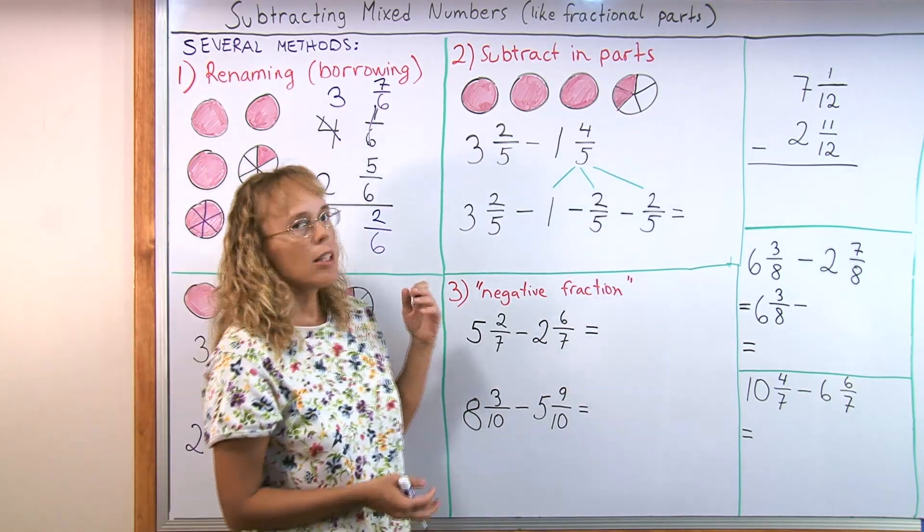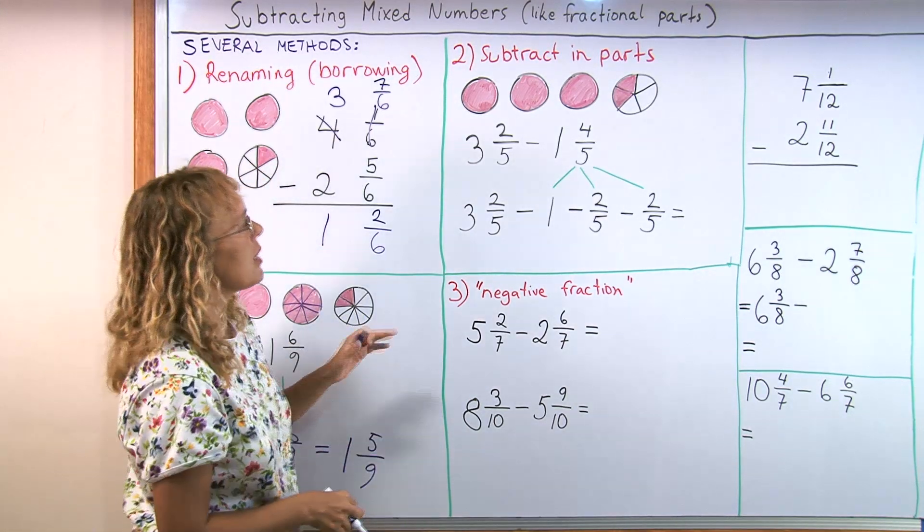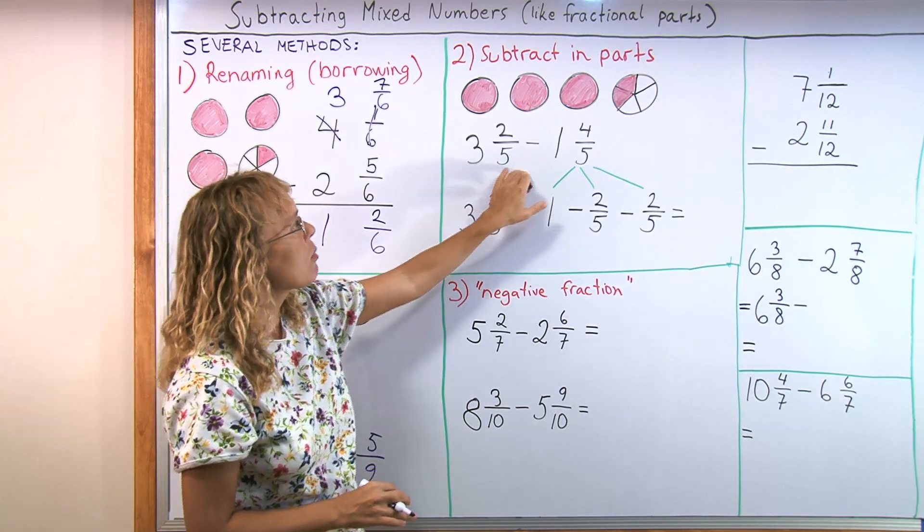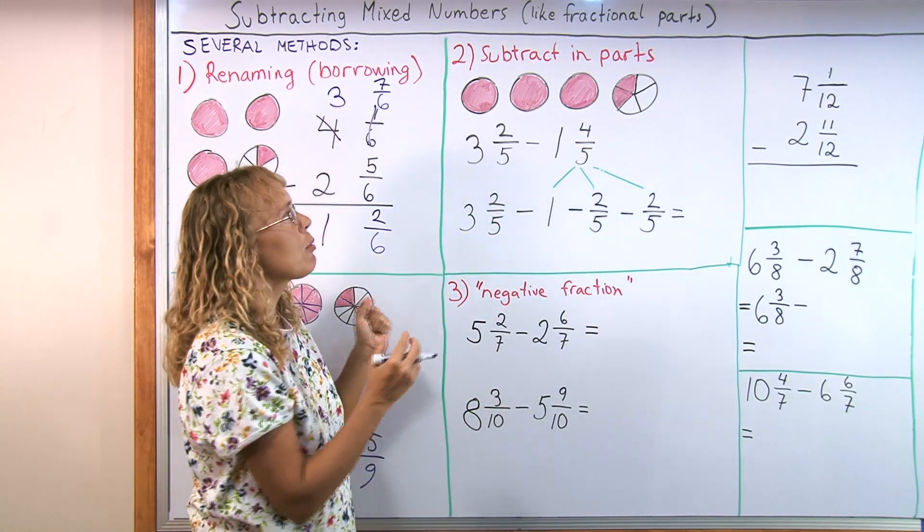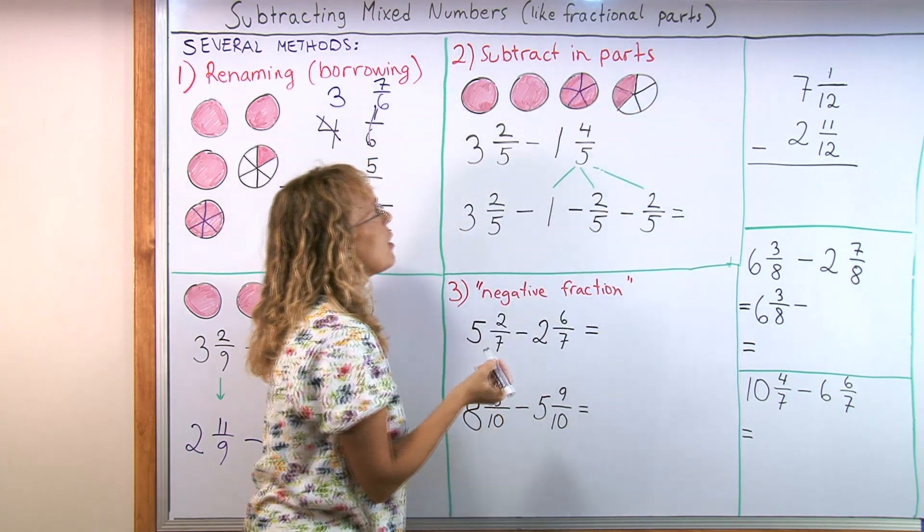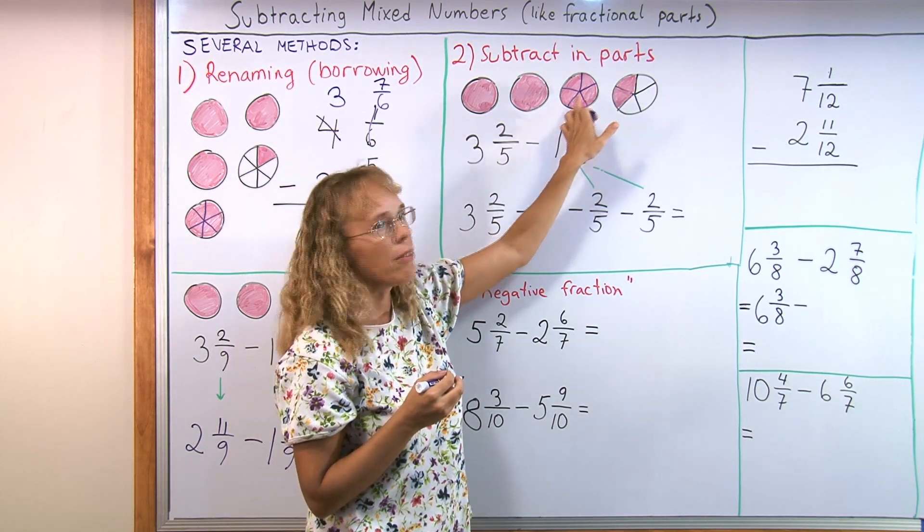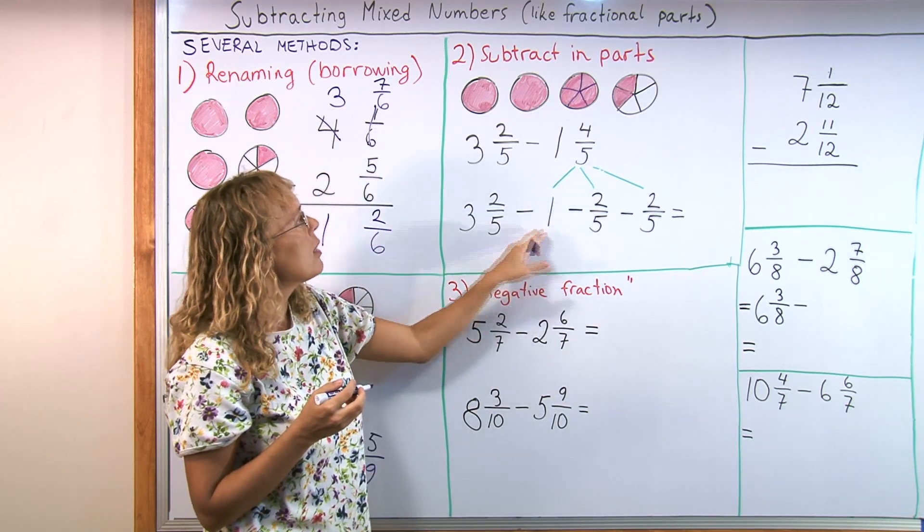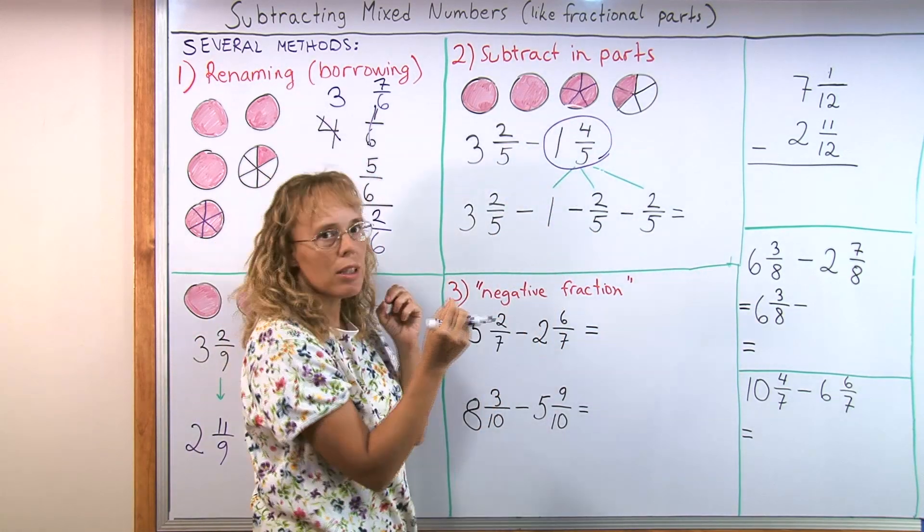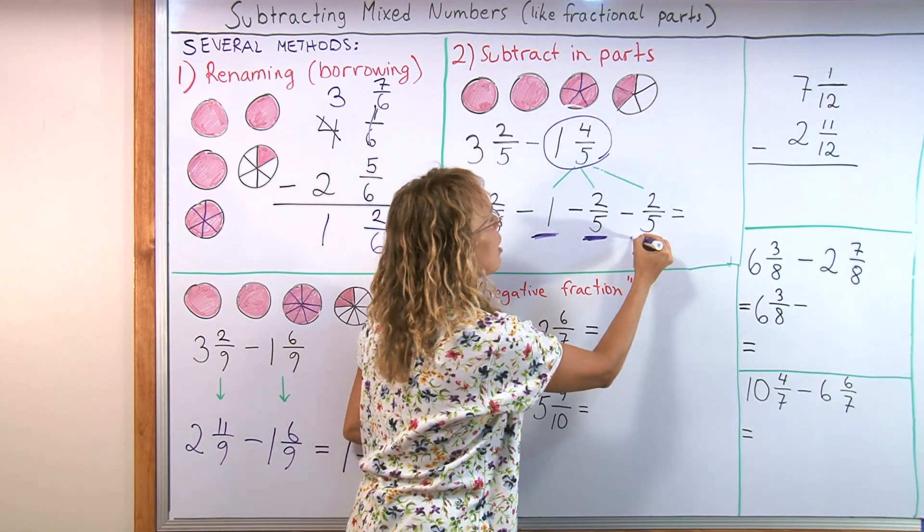The next method I call it subtract in parts. With the visual model it's going to be actually identical looking as in here. But it's written down a little bit differently if you write a second step for the problem. 3 and 2/5. And we take away 1 and 4/5. In the visual model it would be the same thing. You would just divide this into fifths. One of the pies here. And then you would cross out 1 whole pie and 4/5. Take away these 2/5 first and then 2/5 from here. But I wrote it down like this. A number that we subtract from is the same. But then this here. This number is broken into parts. So that there's the 1. And then 2/5 to match these 2/5. And then one more 2/5.